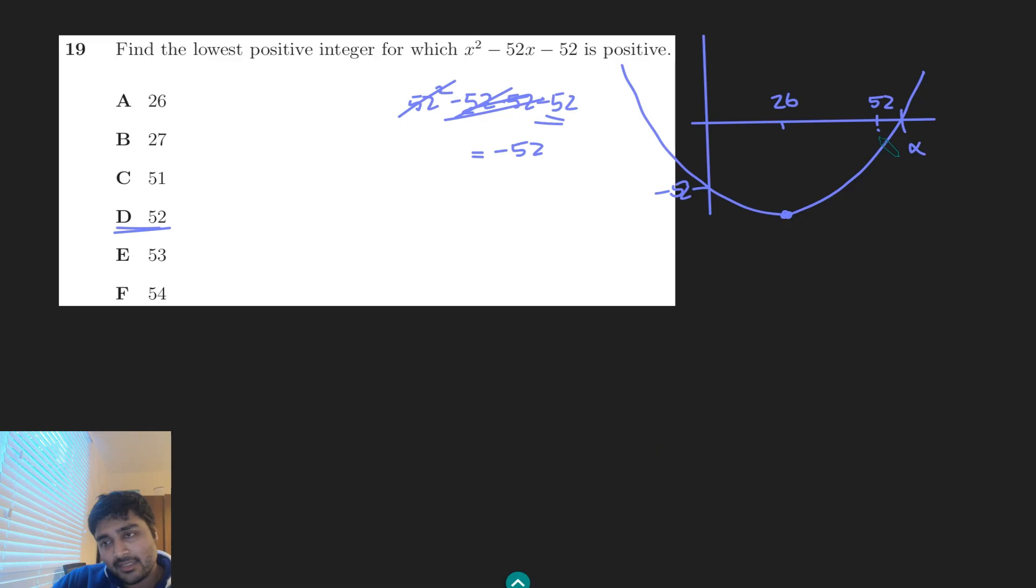And so that means that when I put 52 on my graph, that should be somewhere here where the y-intercept there is negative. It's not really drawn to scale here, but it would be in line with the y-intercept. So we know that when you substitute in 52, the output is a negative number. So the answer can't be 26, 27, 51, or 52. It's either going to be 53 or 54.